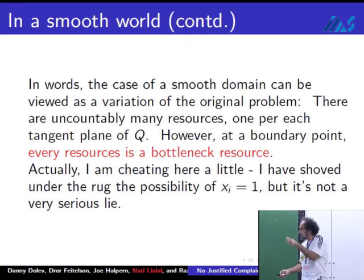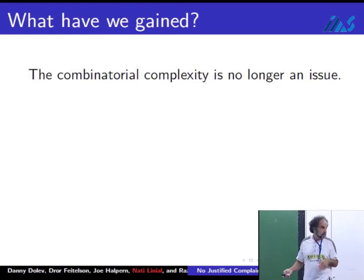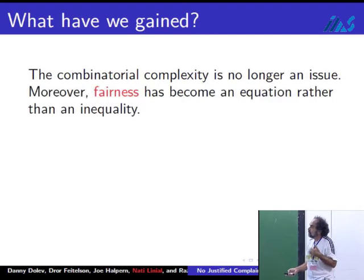Now the thing that made the problem difficult before was that the set J was hard to get our hands on. Now, although it's uncountable, we have it. Everything, every resource is a bottleneck resource. I'm cheating you a little bit, but we have completely eliminated the trouble with the combinatorial complexity of the problem. Fairness used to be an inequality. It's now becoming an equality.